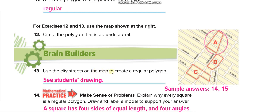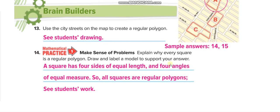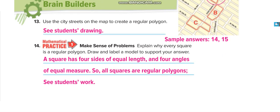Use the city streets on the map to create a regular polygon. If we draw lines — one, two, three, and four — we can draw a regular quadrilateral using these city blocks. Also, explain why every square is a regular polygon — here is the explanation; you can write it down.